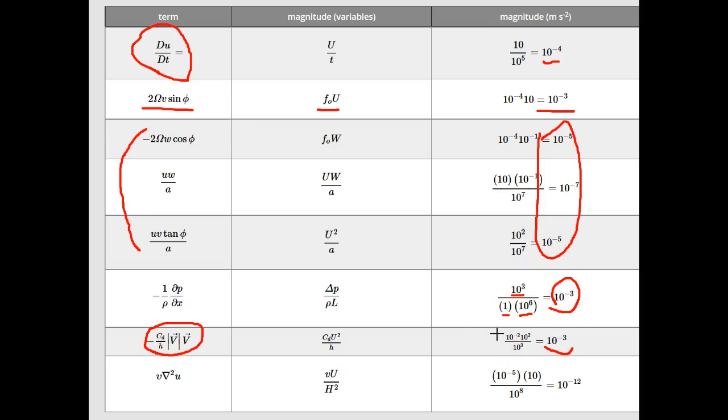When we're not in the boundary layer, then C sub D is actually very, very small. And this term is very small, and we can ignore it. The last term is viscosity, which is true friction. And we can see that for the case of viscosity, it's tiny, and therefore we can always ignore it for synoptic scale flow.